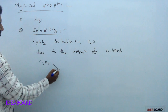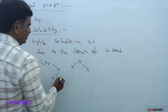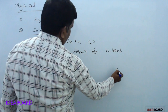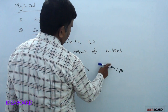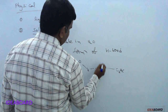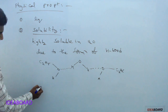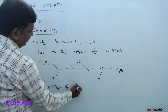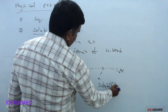For example, taking C2H5OH and H2O: the oxygen and hydrogen atoms form intermolecular hydrogen bonds. Another molecule of C2H5OH also forms intermolecular hydrogen bonds. Because of this intermolecular hydrogen bonding, alcohols are highly soluble in water in any proportion.